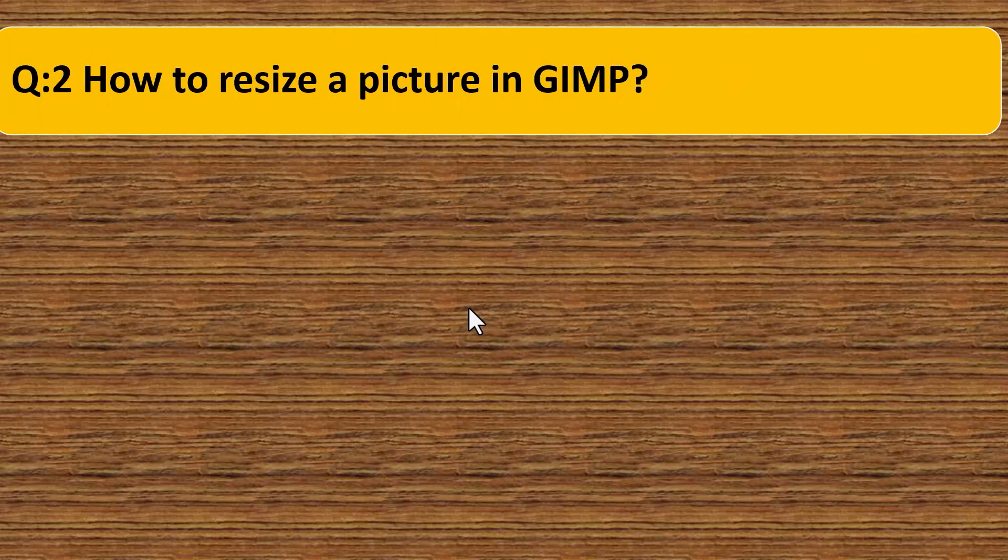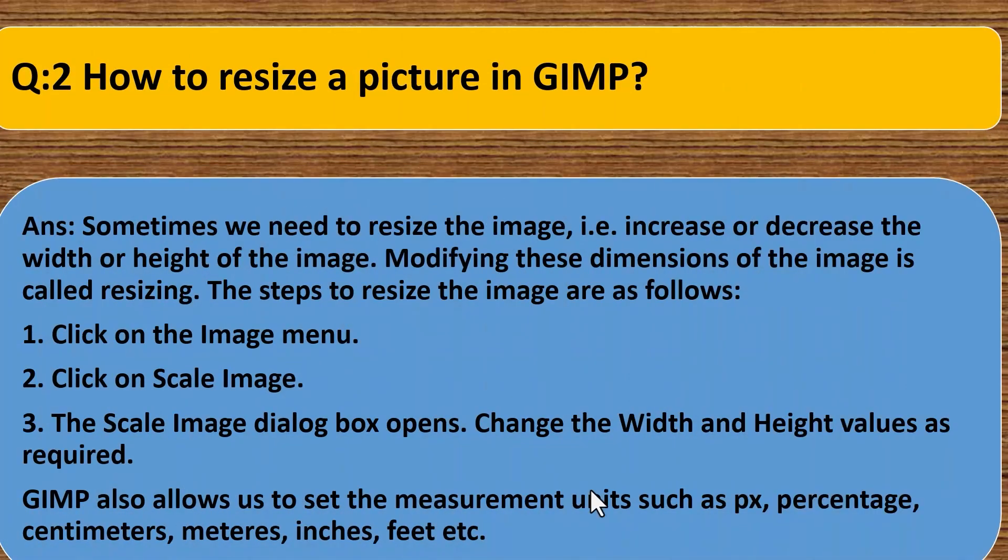Question 2. How to resize a picture in GIMP? Answer. Sometimes we need to resize the image, i.e. increase or decrease the width or height of the image. Modifying these dimensions of the image is called resizing. The steps to resize the image are as follows. First, click on the image menu. Second, click on scale image. Third, the scale image dialog box opens. Change the width and height values as required. GIMP also allows us to set the measurement units such as pixels, percentage, centimeters, meters, inches, feet, etc.